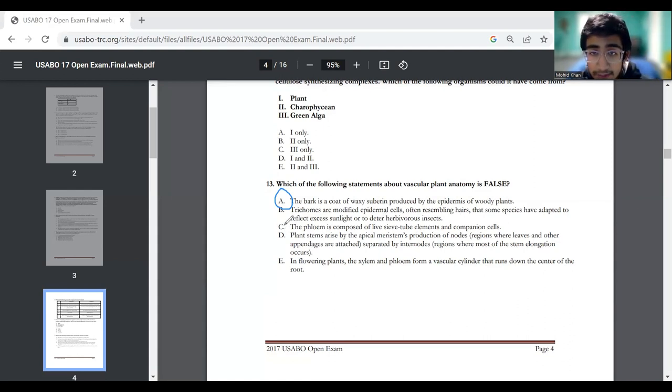D. Plant stems arise from apical meristem produced by nodes, which are separated by internodes. That is correct. Because if you see here, if I have a plant, we have the nodes right here. Let me make that again. So let's say this is a plant. This right here is a node. These are internodes, between the nodes, right here. These are internodes between the different nodes. And in flowering plants, the xylem and the phloem form a vascular cylinder that runs down the center of the root. Yes, that is of course true. So therefore, the answer would be A.